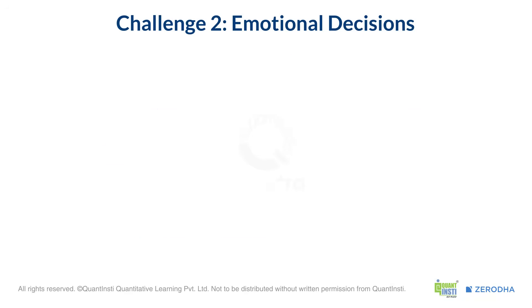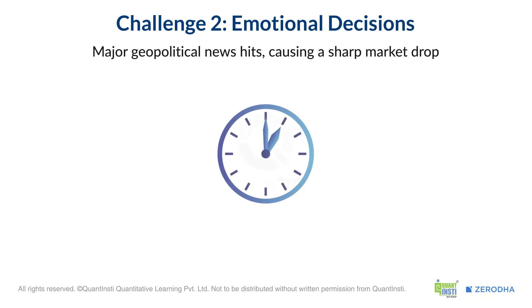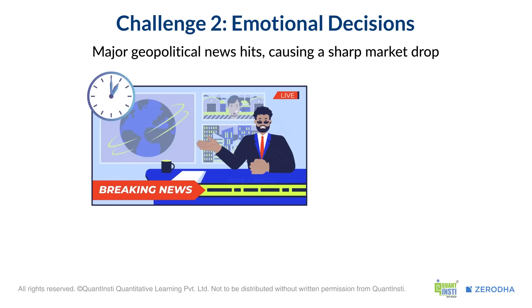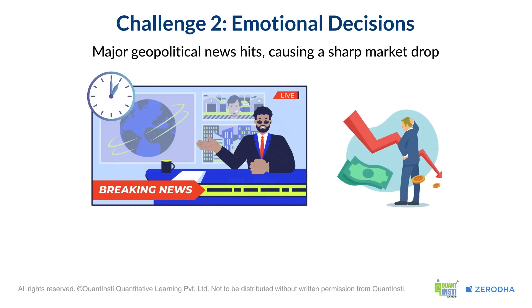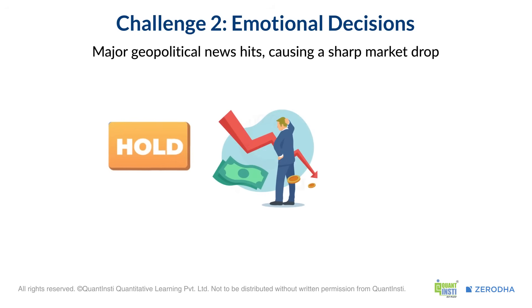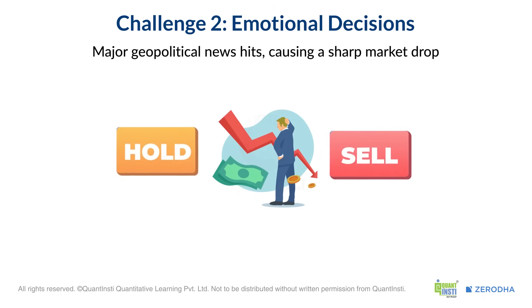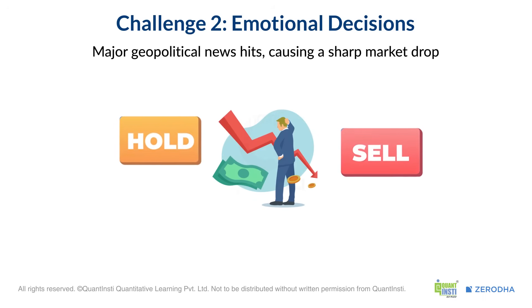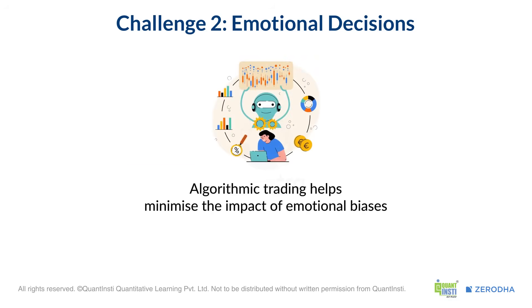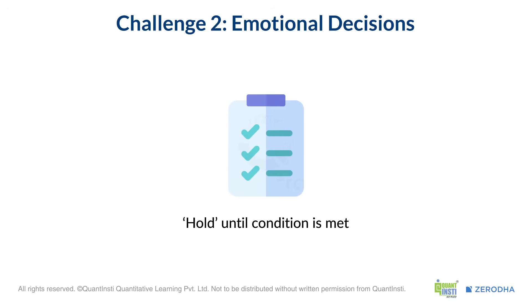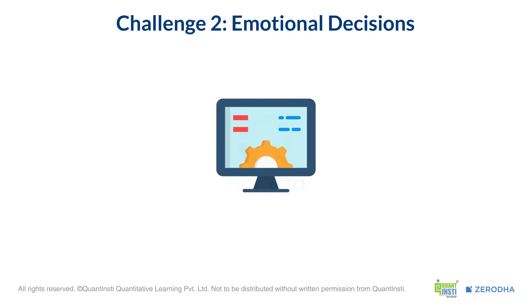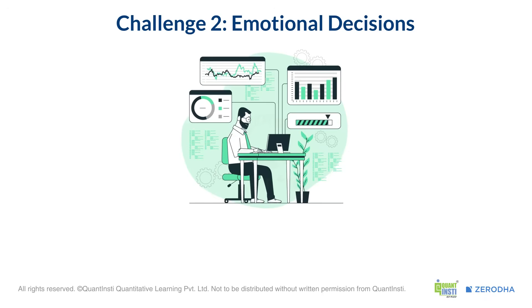Now consider market volatility. It's 1pm and a major announcement related to geopolitical tensions hits the news, causing a sharp drop in the stock you own. Your predefined plan was to hold, but you feel a strong urge to panic sell. Algorithmic trading can help minimize the impact of emotional biases. Your rules are set beforehand — maybe to hold until a specific technical indicator signals an exit. The system follows these rules, providing a disciplined approach even in challenging market conditions. By automating your trades, you are trading based on logic, not fear.